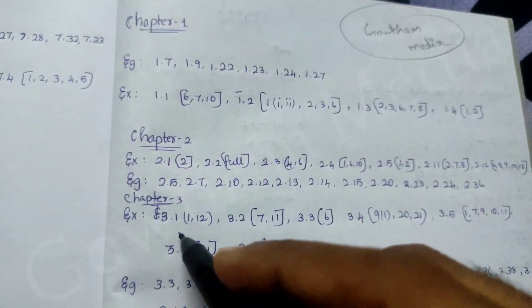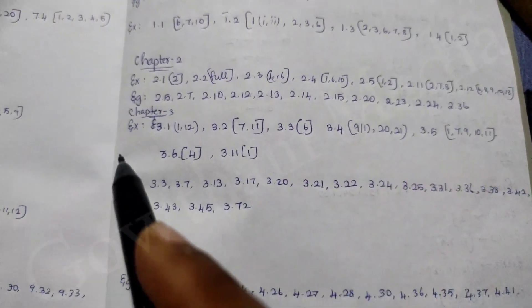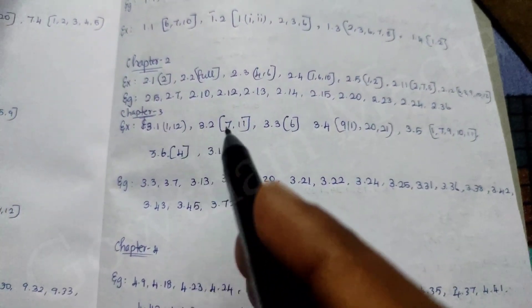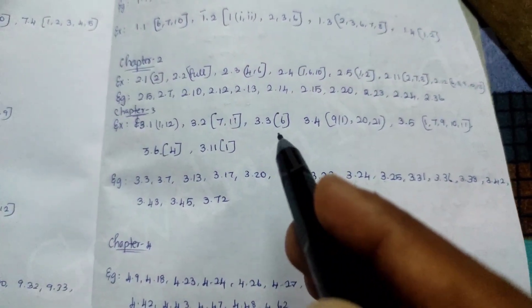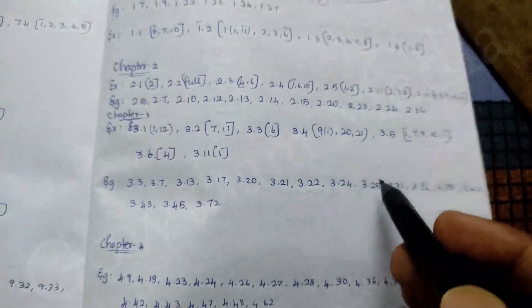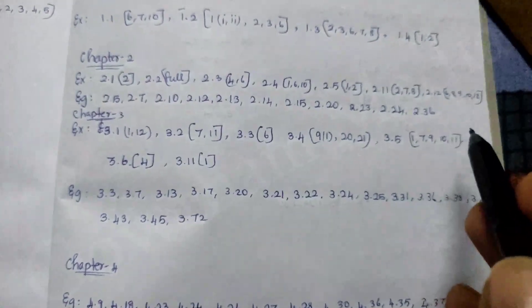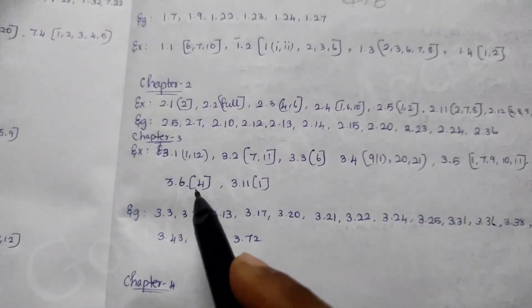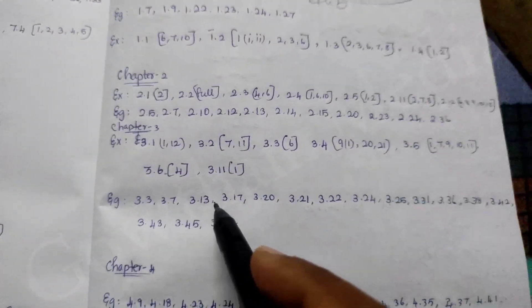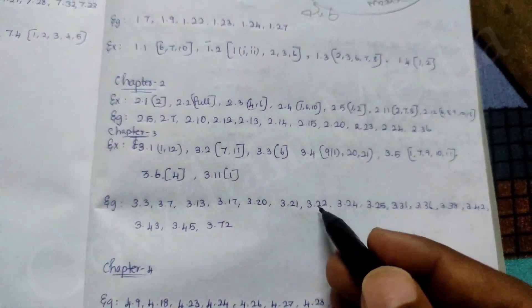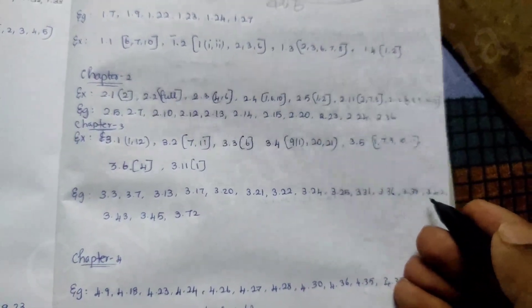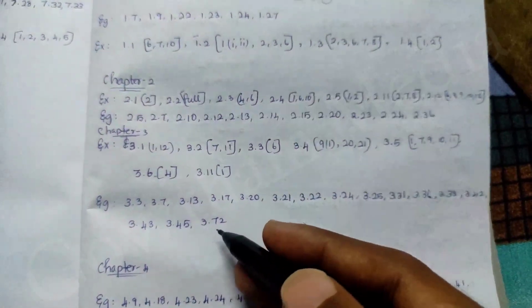Chapter 3. Examples: 3.3, 3.7, 3.13, 3.17, 3.20, 3.21, 3.22, 3.24, 3.25, 3.31, 3.36, 3.38, 3.42, 3.43, 3.45, 3.72. That is exactly there.